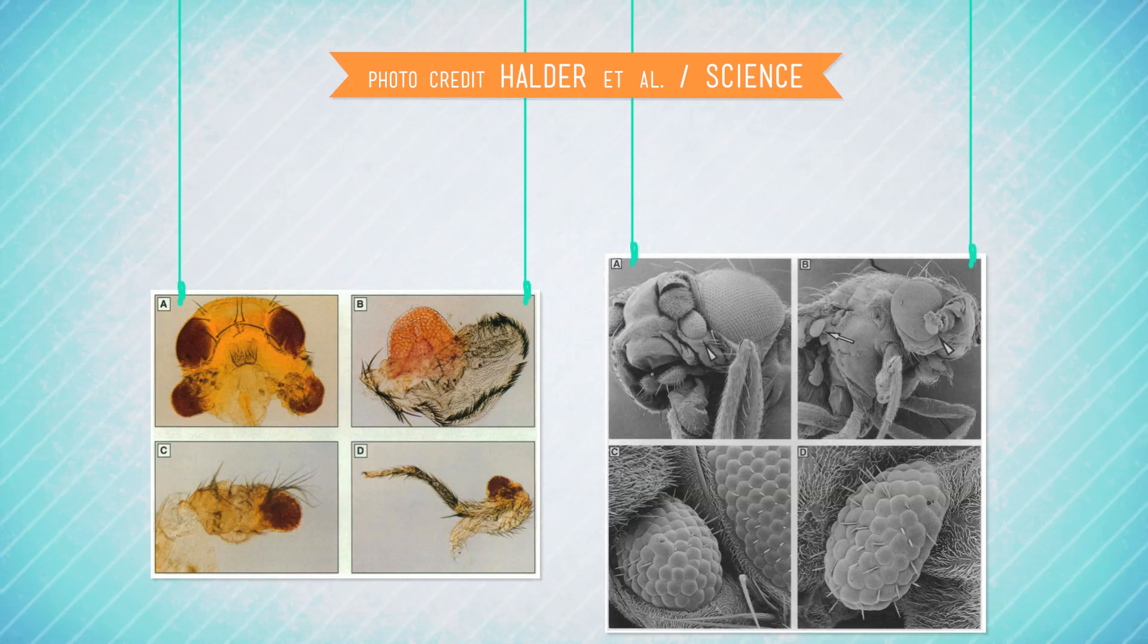But they activated the mouse eyeball gene in a region of the fly that would become the fly's back leg. And so what do you think happened? I'm not going to tell you yet, because I want you to guess. Wrong. The fruit fly did not grow a mouse eyeball next to its back leg. It grew a fruit fly eye next to its back leg.